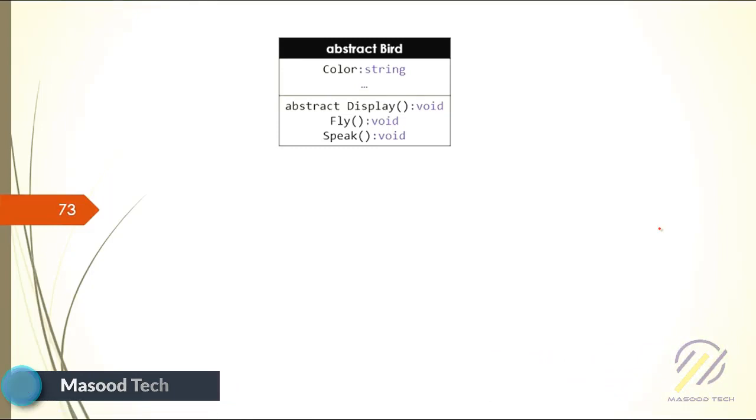The fly method should be void and it will print that they're flying or not flying. The speak method should be how they're speaking. We're really interested in the display method, but let's see how the design goes.